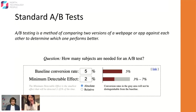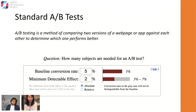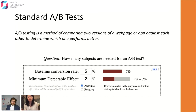Most of you are probably very familiar with A/B testing already, but I'll quickly go over it. An A/B test is a method of comparing two versions of a web page or app against each other to determine which one performs better. A lot of the time you can go online and find a calculator to figure out your sample size and experiment duration.